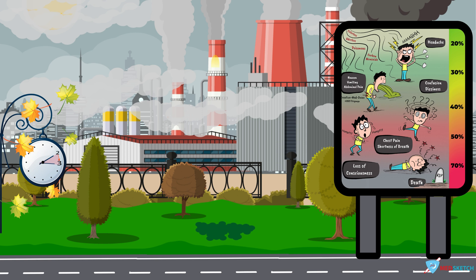You cannot remember all these but you can remember simply that at 20% headache can be present, 30% nausea, vomiting, abdominal pain, 40% confusion and dizziness, 50% chest pain, shortness of breath, 70% loss of consciousness. In the text, detailed percentage ranges and symptoms are given.